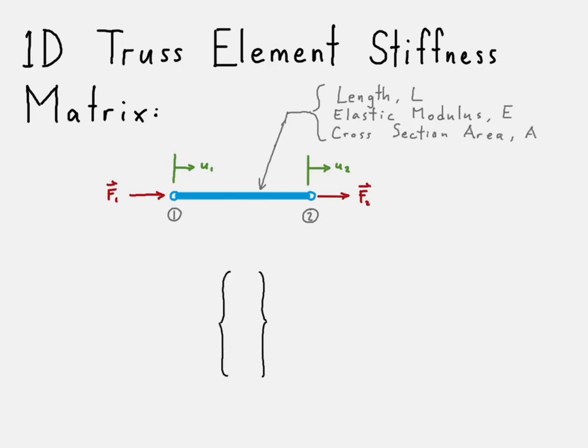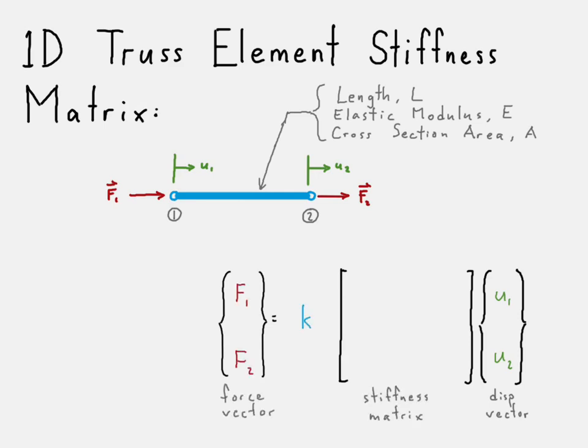And if we know all those things, then we can go ahead and put together our truss element stiffness matrix in one dimension. There's our displacements—pardon me, there's our force vector. And this is our stiffness matrix, where instead of having K, we have E, our elastic modulus, multiplied by our cross-sectional area A, divided by the length L.